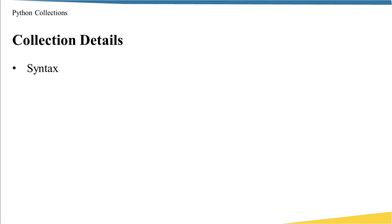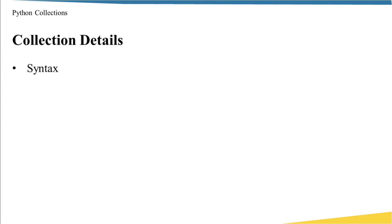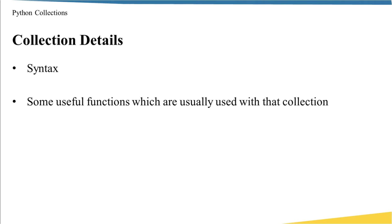Now let's see the collection details you have to know about each one of these collections. First, syntax — what I mean by syntax is how you are going to define this collection. For example, if you want to define a list, you use square brackets, whereas if you want to define a dictionary, you use curly braces. You also have to know the functions commonly used with these collections, because being familiar with them will save your time by not having to create those functionalities yourself.